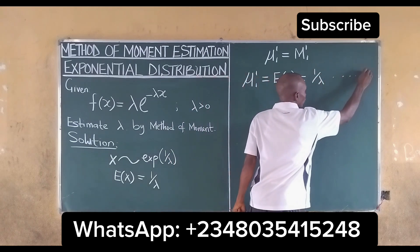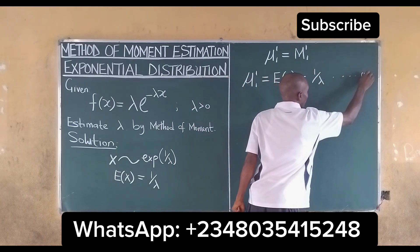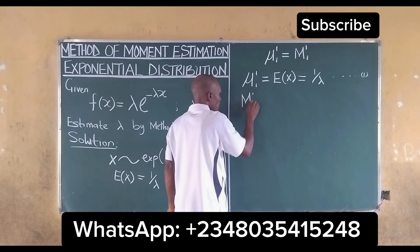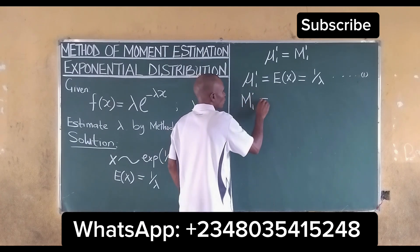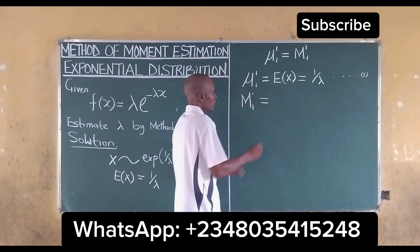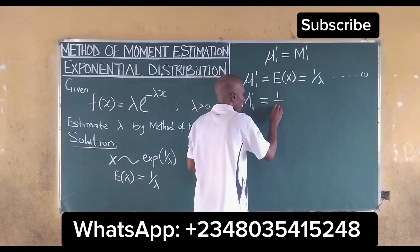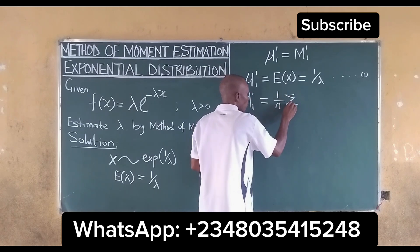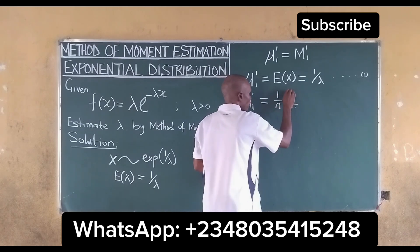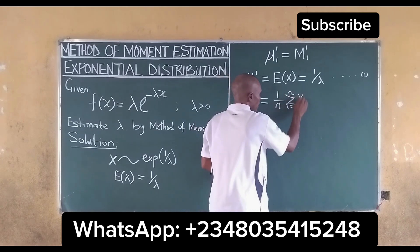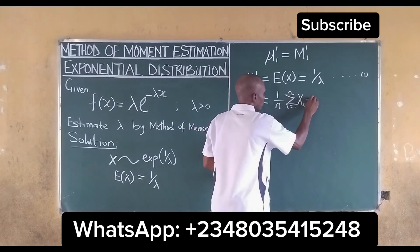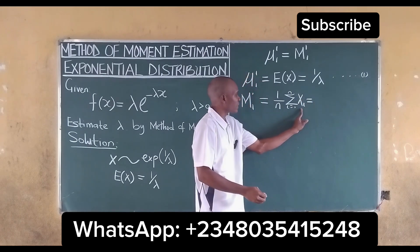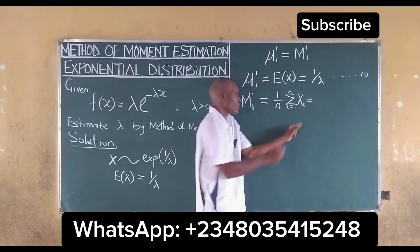We take this as equation 1. For the sample mean — the first sample moment — we have 1 over n times the summation from i equals 1 to n of x_i, which is also equal to x-bar, our sample mean. We take this as equation 2.